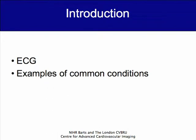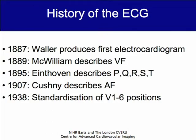Where did the ECG come from? The first description of an electrocardiogram goes right back to 1887, where a chap called Waller produces the first electrocardiogram — just a single line tracing. The first description of an abnormal ECG comes two years later, with McWilliam describing ventricular fibrillation. The nomenclature we use in everyday standard practice is defined by Eindhoven, who defines P, Q, R, S, and T waves. AF is described a few years later, and the standard configuration of an ECG we use today occurred just before the Second World War, with the standardization of the anterior chest leads.